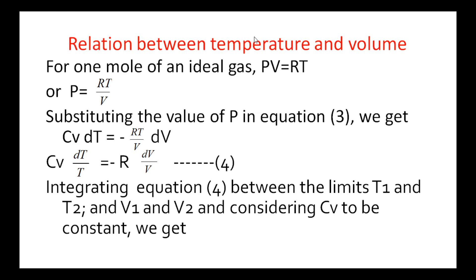Next, the relation between temperature and volume. There are two important relations in adiabatic process. One is the relation between temperature and volume. To derive this, consider 1 mole of an ideal gas given by PV equal to RT. In this equation, P is given as P equal to RT by V. Substituting the value of P in equation 3, we get CV dT equal to minus RT by V dV. The T term is brought to the left-hand side and goes to the denominator. Then we get the equation CV dT by T equal to minus R dV by V. This is equation 4.